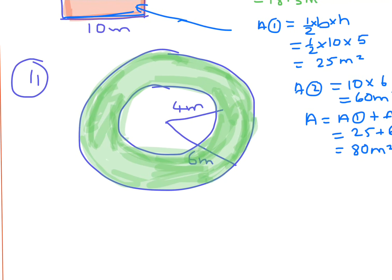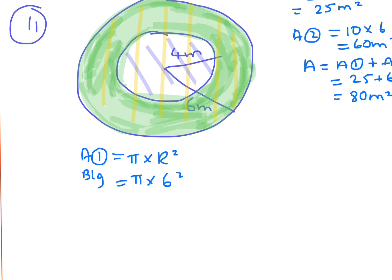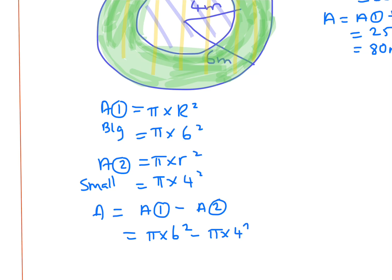Finally, the donut shape. We need the area of the big circle minus the area of the small circle inside. Area 1 is the big circle: pi times 6 squared. Area 2 is the small circle: pi times 4 squared. Instead of subtracting two rounded answers, we calculate pi times 6 squared minus pi times 4 squared together in the calculator, and you end up with 62.8 meters squared.